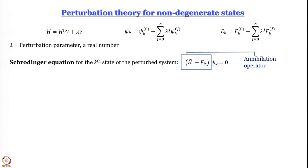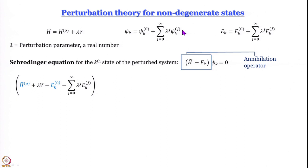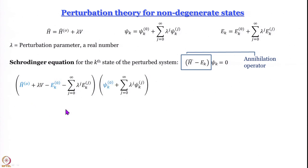What we do now is expand: instead of H-hat we write H-hat-zero plus lambda-V, instead of E_k we write E_k^(0) plus the sum of perturbation terms, and instead of psi_k we write the expanded expression. So the full annihilation operator acting on the expanded wave function equals zero: (H-hat-zero plus lambda-V minus E_k^(0) minus the sum of perturbation terms) times (unperturbed wave function plus sum of correction terms) equals zero.